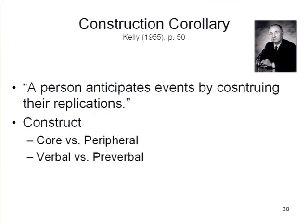The first corollary in Kelly's personal construct theory is the construction corollary: a person anticipates events by construing their replication. Basically, you anticipate events by categorizing them — and once you've categorized an event, you kind of know what to expect. That's what he means: if you had another object in this category, here's what it would do; if you had another event in this category, here's what its consequences would be.